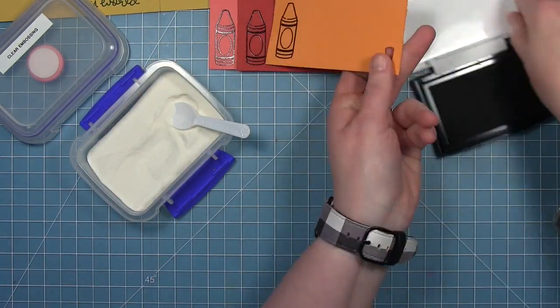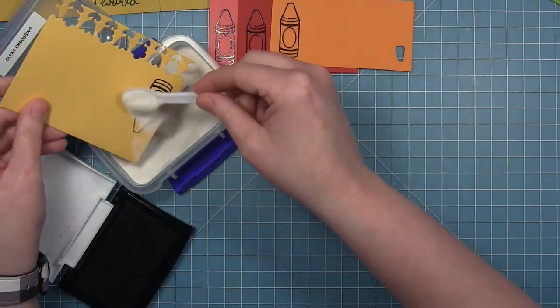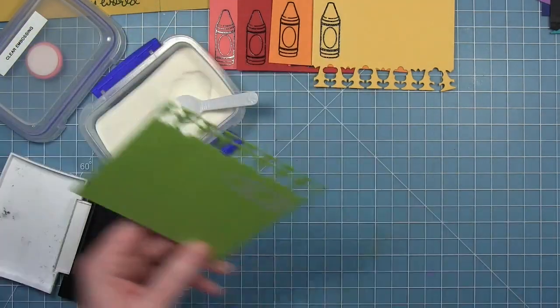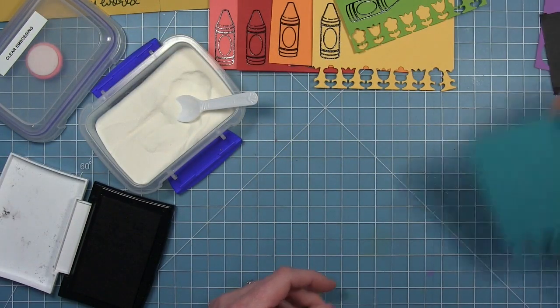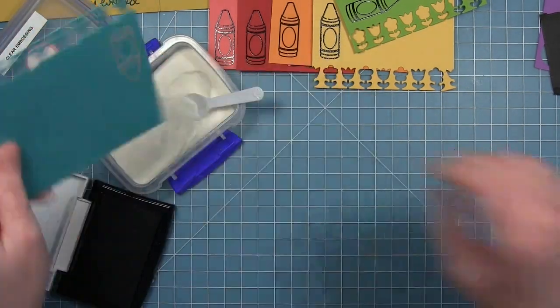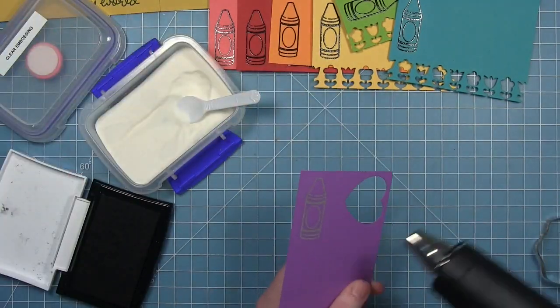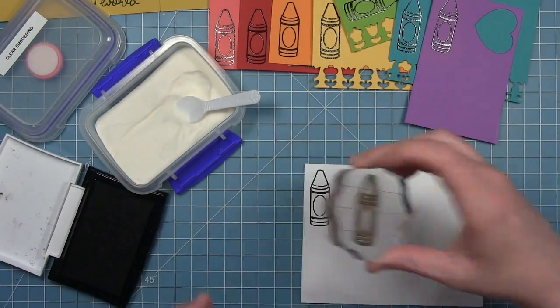So I've got some guava cardstock, chili pepper, some fake tan, this is sunflower, cilantro, and you can see I'm using scraps. This is a perfect way to use up scraps. This is peacock, and sugar plum. I skipped blue jay, but I'm going to go back to it.